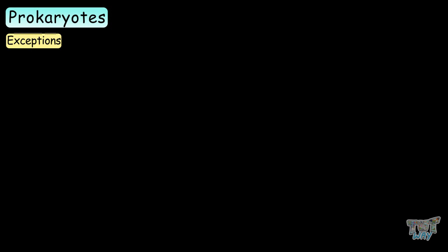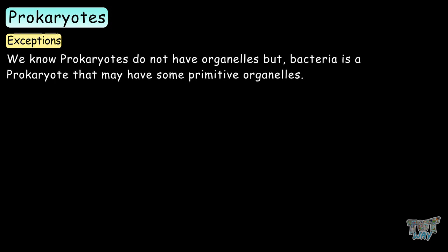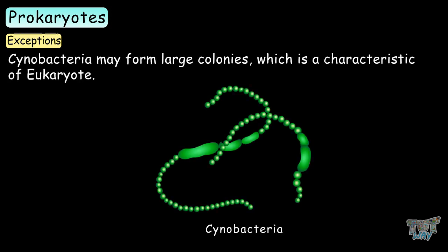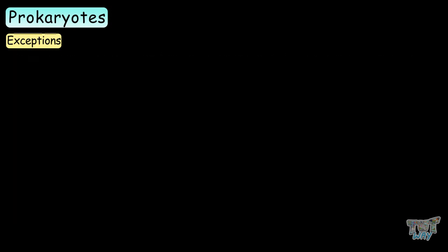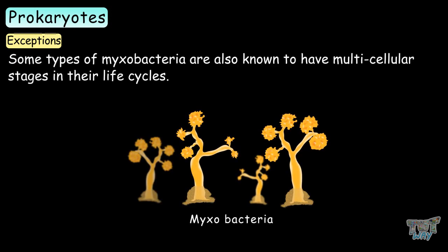Now let's learn some exceptions. We know prokaryotes do not have organelles, but bacteria is a prokaryote that may have some primitive organelles. Also, cyanobacteria may form large colonies, which is a characteristic of eukaryotes. Some types of myxobacteria are also known to have multicellular stages in their life cycles.